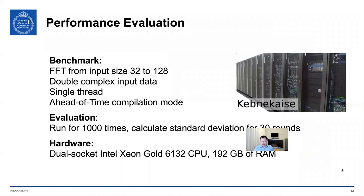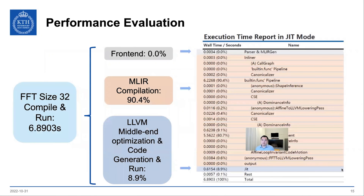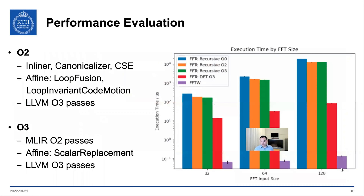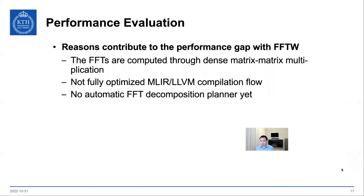For the evaluation, we run it on the Swedish supercomputer. Here is the compilation time. You can see that in my implementation, the MLIR compilation takes most of the time. We also run the execution of the FFT algorithm with different configurations to enable different optimization passes and compare it with FFTW. We can see that there is still a big gap between our implementation and FFTW.